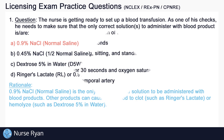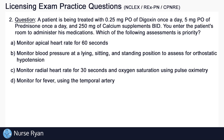Moving on to question number two, a patient is being treated with 0.25 mg PO of digoxin once a day, 5 mg PO of prednisone once a day, and 250 mg of calcium supplements BID. You enter the patient's room to administer his medications. Which of the following assessments is priority?